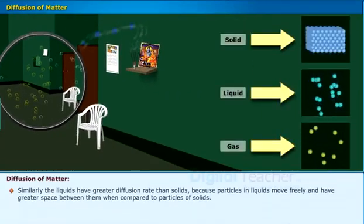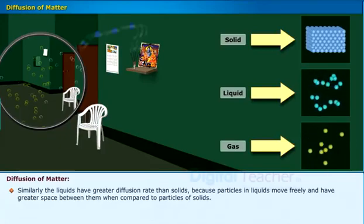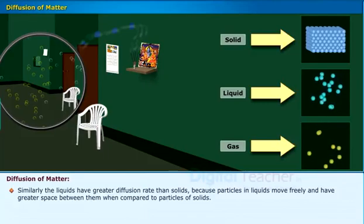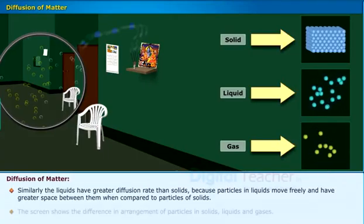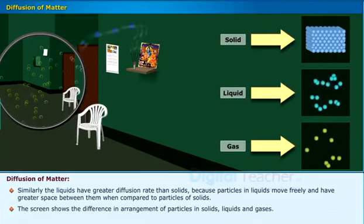Similarly, the liquids have greater diffusion rate than solids, because particles in liquids move freely and have greater space between them when compared to particles of solids. The screen shows the difference in arrangement of particles in solids, liquids and gases.